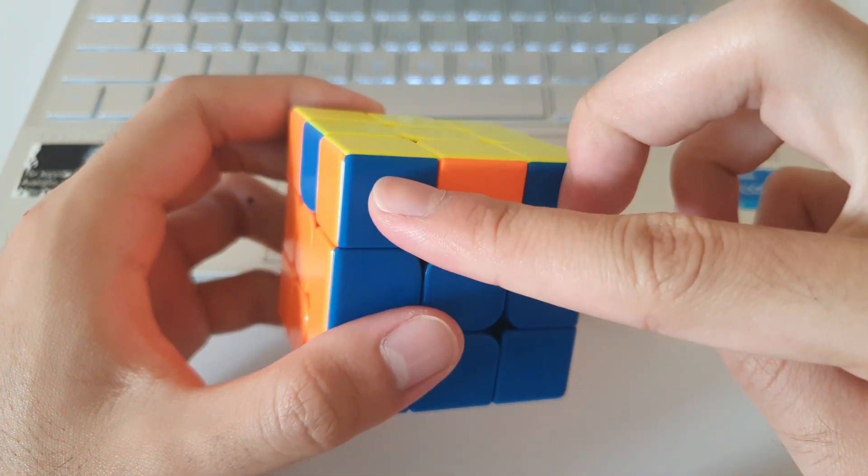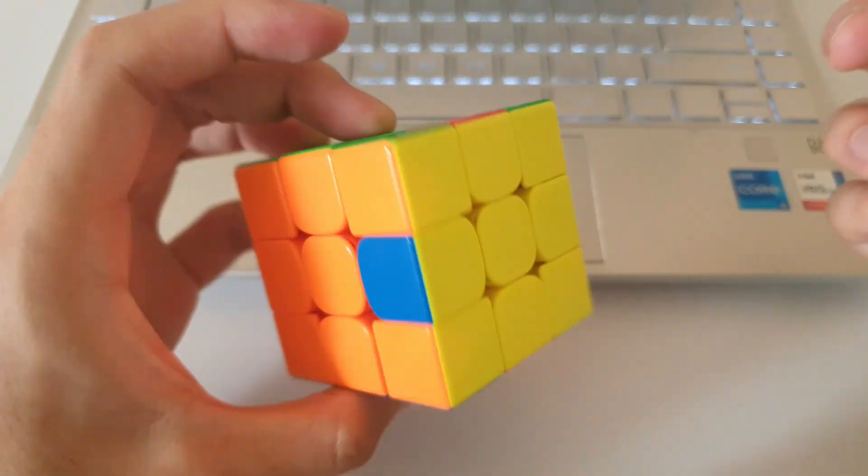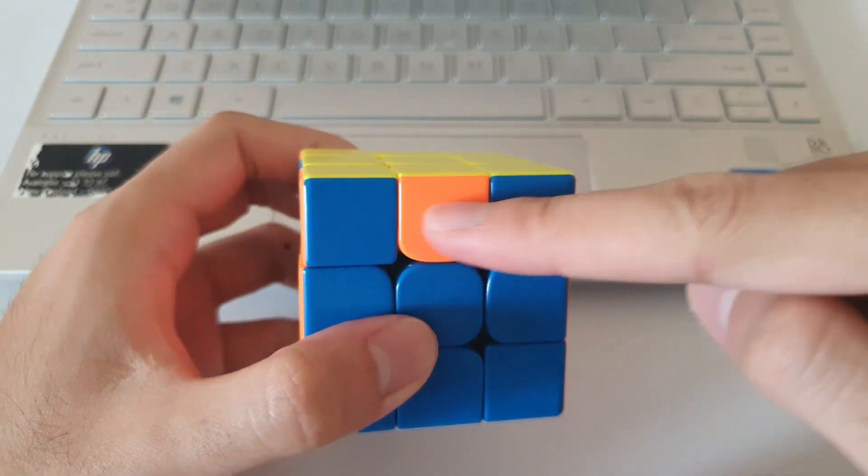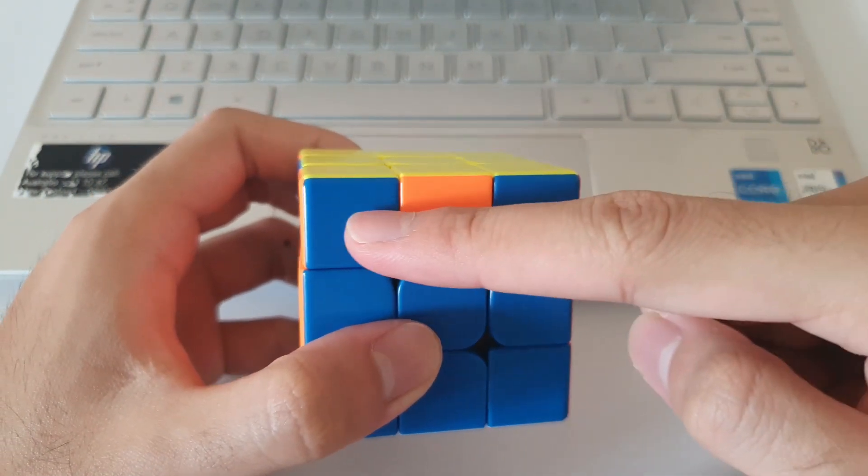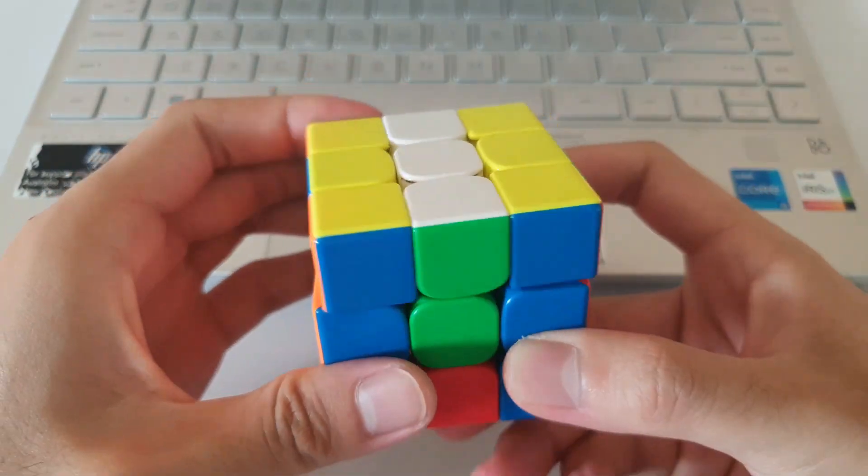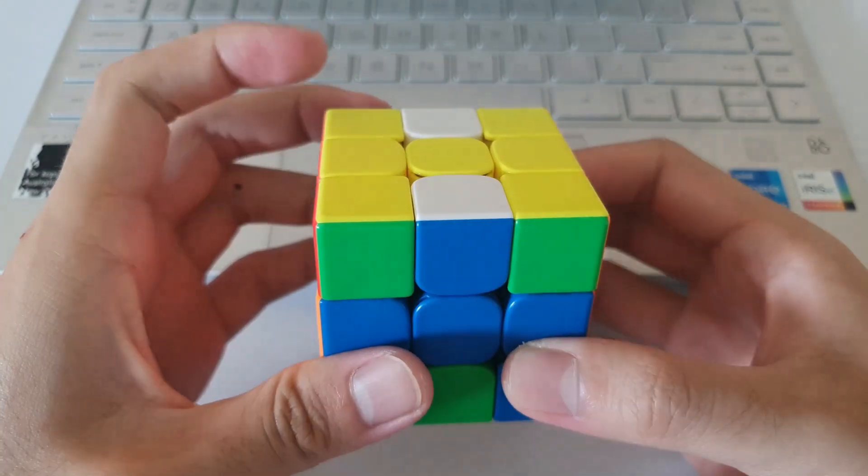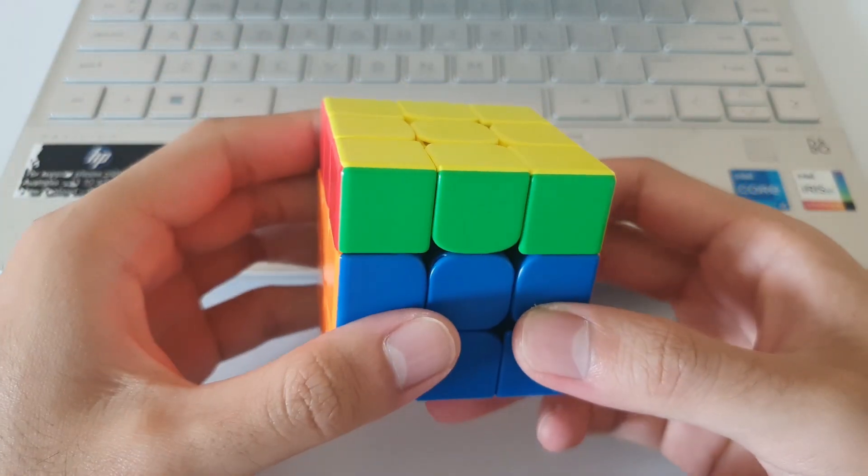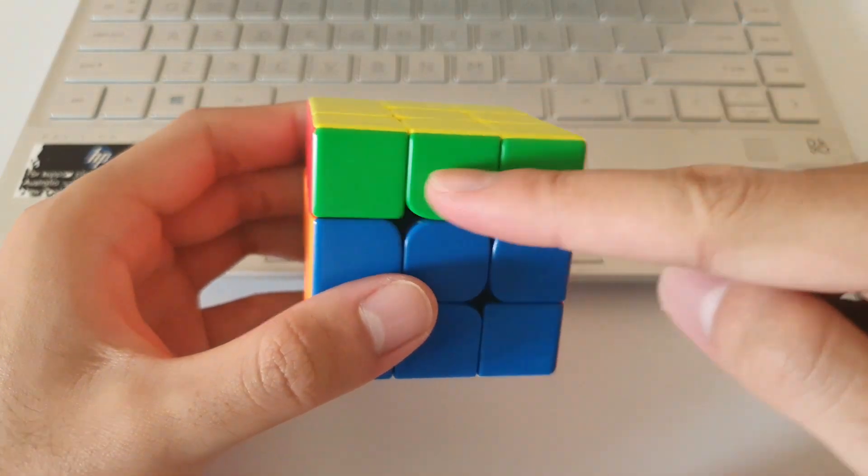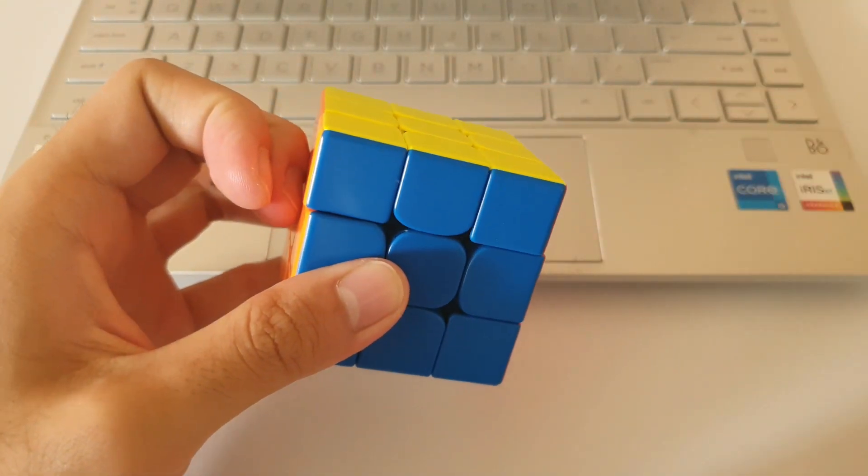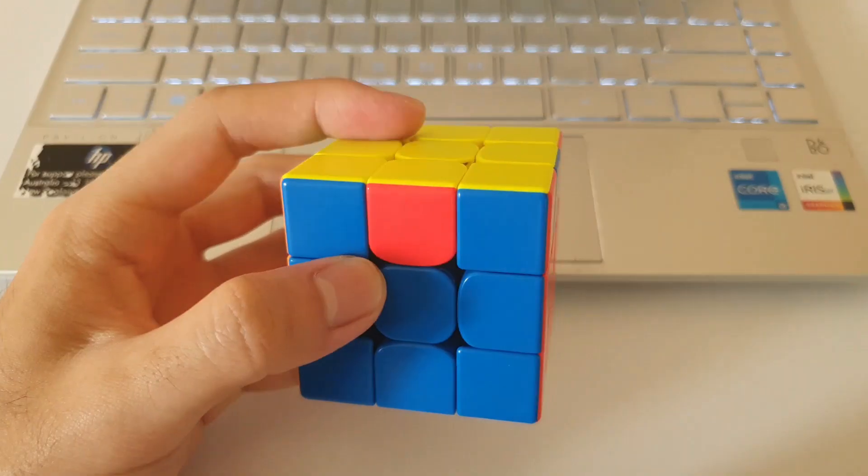But the opposite color of blue is obviously green. So green is actually going to be at the front here after we do this algorithm. So it'll go something like this. As expected, green ends up at the front. And so we'll have to do a U2 at the end to solve AUF.